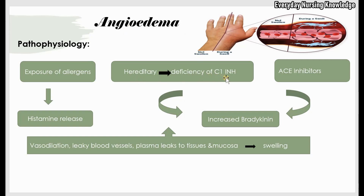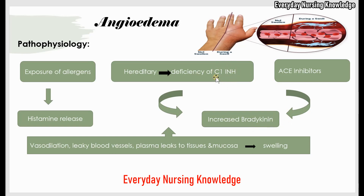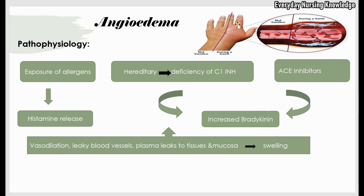In hereditary angioedema, there is a deficiency of C1 esterase inhibitor, a plasma protein. This protein normally regulates bradykinin in our body. Bradykinin is released when there is trauma or injury to tissues. A deficiency of C1 esterase inhibitor leads to increased bradykinin levels. Bradykinin is also a vasodilator — it dilates and causes blood vessels to leak, so fluid leaks into the tissues, leading to angioedema.